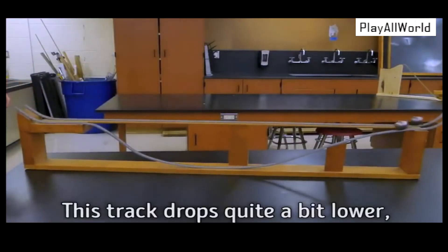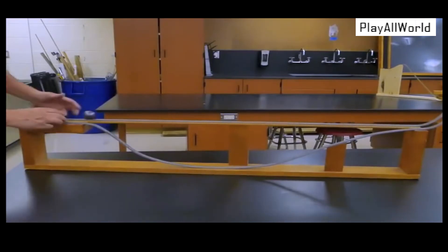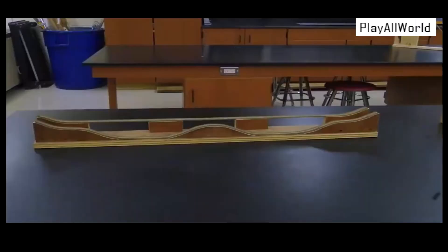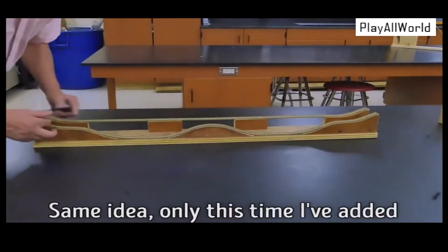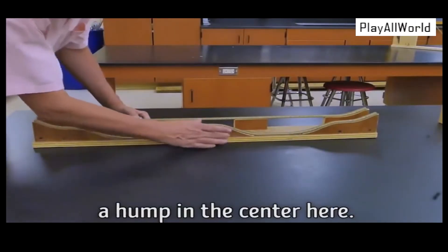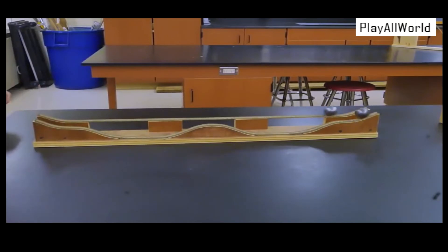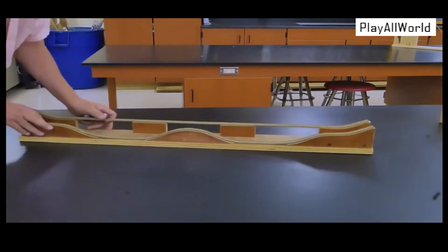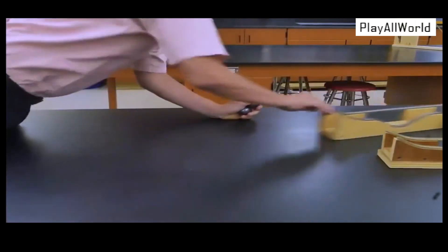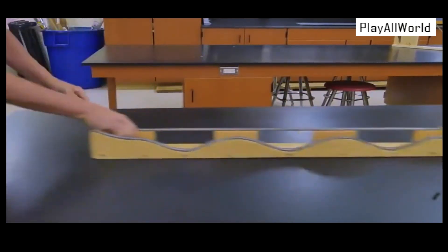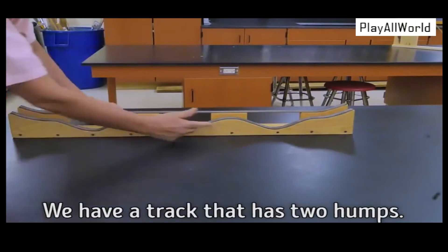This track drops quite a bit lower, but we still see the same results. Same idea, only this time I've added a hump in the center here. Let's see what happens with this one. We have a track that has two humps.